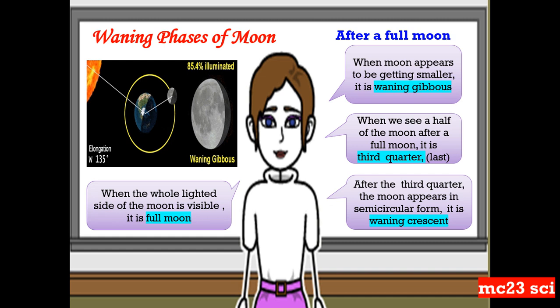And after the third quarter, the moon appears in a semicircular form. It is called the waning crescent.